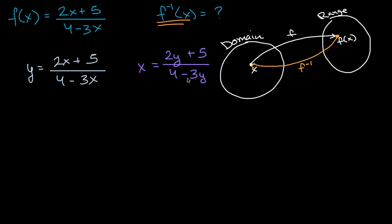So the first thing that I would do is multiply both sides of this equation by four minus three y. If we do that, on the left hand side, we are going to get x times each of these terms. So we're going to get four x minus three y x. And then that's going to be equal to, on the right hand side, since we multiplied by the denominator here, we're just going to be left with the numerator. It's going to be equal to two y plus five.